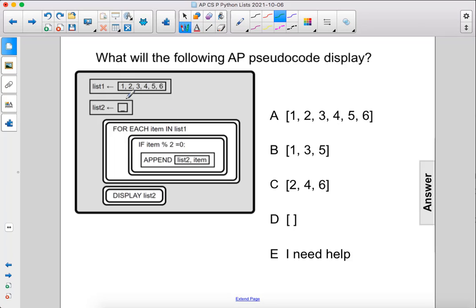For each item in list 1, so we're going to iterate through this list here. If that number that we are currently on, modulus 2 equals 0, we're going to append it to list 2.